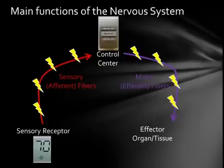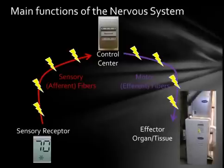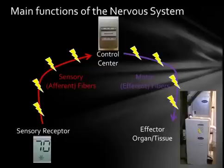The thermostat then sends the signal to the HVAC unit, which in this case would turn the air conditioning on. The air conditioning is thus an effector for the system. In a human, if the core body temperature was too high, the nervous system would respond by increasing circulation through the superficial cutaneous circulation and through the formation of perspiration.